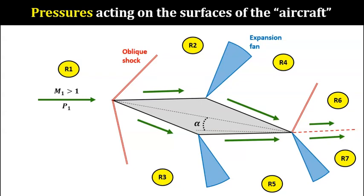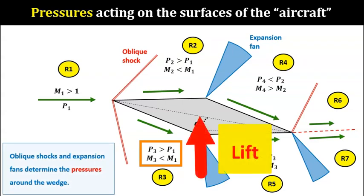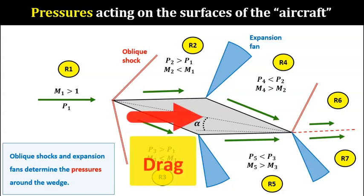So because of this, the lower surface will experience the biggest pressure compared to all the other surfaces. The overall effect is that it pushes the entire wedge upward, which is basically the lift force. At the same time, because of the highest pressure in region 3, the overall effect is to push the entire wedge backward, which is basically the drag force.